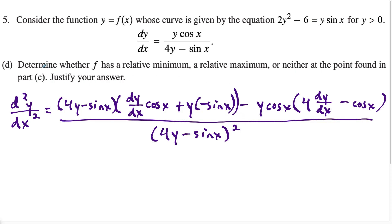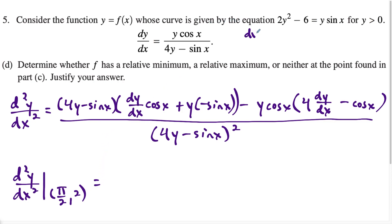Then minus the high function times the derivative of the low: the derivative of four y minus sine x is four dy/dx minus cosine x. All over the denominator squared. This is a really messy second derivative. Now we evaluate at the point pi over two comma two found in part C. An important observation: at this point the slope is horizontal, so dy/dx equals zero there. Anytime we plug in pi over two comma two to dy/dx, it equals zero, which simplifies things nicely.